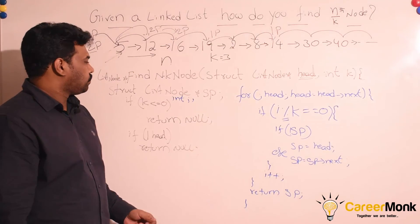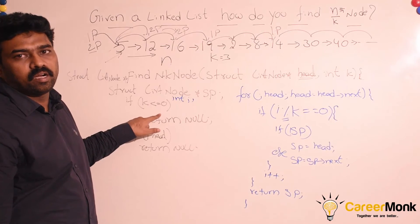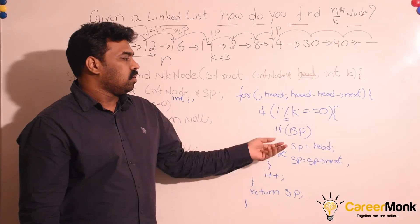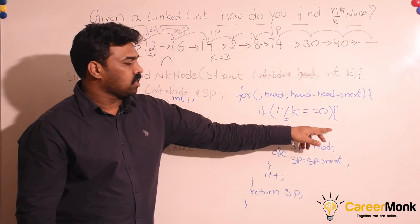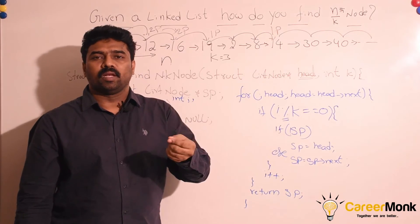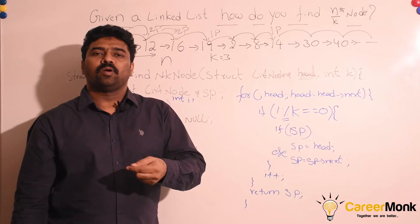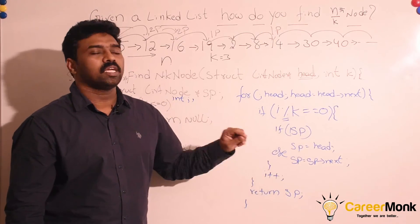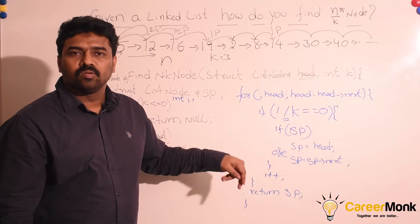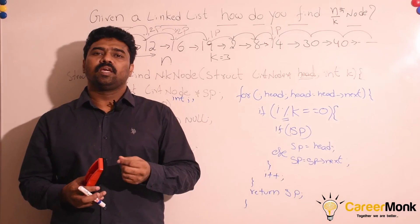Let us review the code. First we check whether k is a valid input — if it is less than or equal to 0, it is not valid. If the linked list is empty, we return null. While traversing the linked list, for every k jumps of the first pointer — when i % k == 0 — we check whether the second pointer is null. For the first time it will be null, so we assign it to head. In the else case, we assign it to the next node, incrementing the second pointer by 1. We increment i each iteration and at the end return the second pointer, which is the n/kth node.